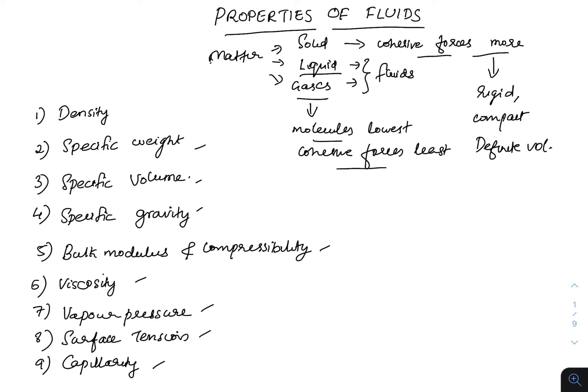So we have now studied about what fluids are — they are liquids and gases collectively. Now we will study about different properties of fluids. There are nine properties we are studying here: density, specific weight, specific volume, specific gravity, bulk modulus and compressibility, viscosity, vapor pressure, surface tension, and capillarity. Now let us discuss each one separately.